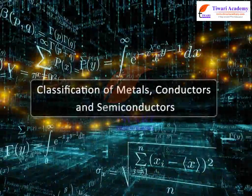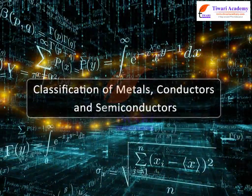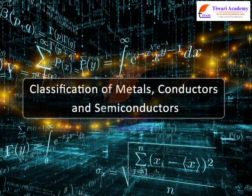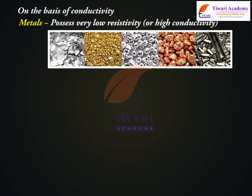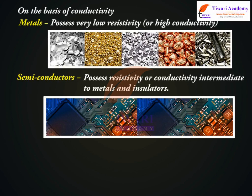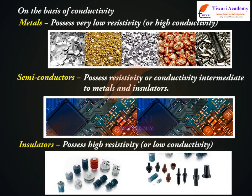Classification of Metals: Conductors and Semiconductors. On the basis of conductivity, metals possess very low resistivity or high conductivity. Semiconductors possess resistivity or conductivity intermediate to metals and insulators. Insulators possess high resistivity or low conductivity.